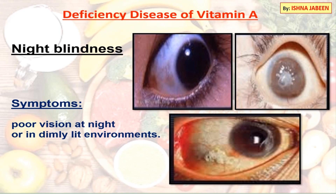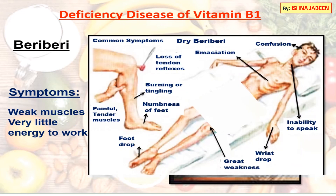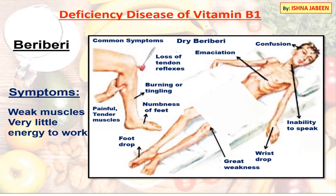Deficiency disease of vitamin A: deficiency of vitamin A causes a disease known as night blindness. Its symptoms include poor vision at night or in dimly lit environments.